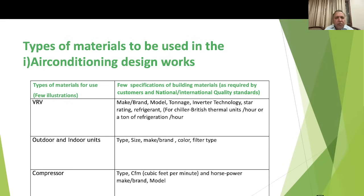For air conditioning materials, the main key items are VRV outdoor units and compressors. For VRV, designers need to specify the make, brand, model, tonnage, inverter technology, star rating, and type of refrigerant. For outdoor and indoor units, specify the type, size, make, brand, color, and filter type. For the compressor, specify the type, make, brand, and CFM rating or horsepower.